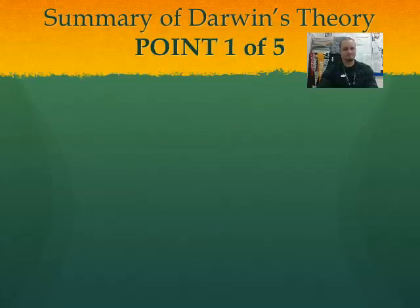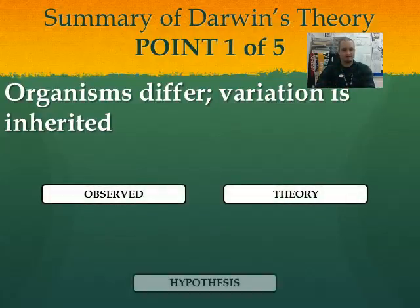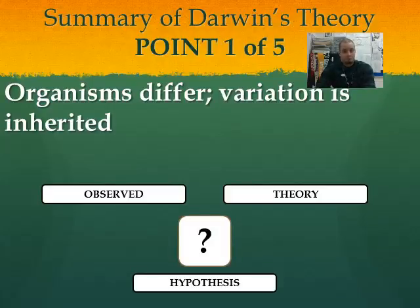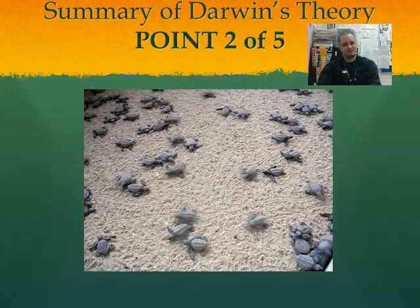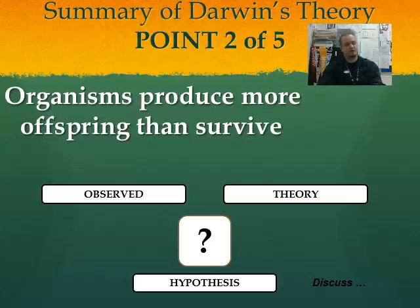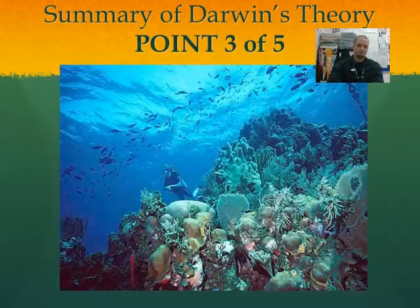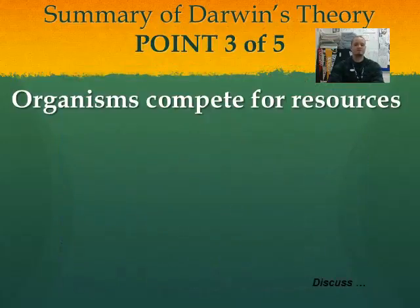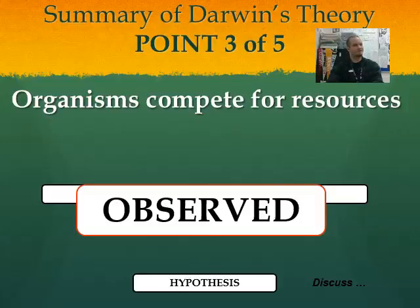A quick summary of Darwin's points: organisms differ and variation is inherited — this is observed; we can see this in everyday life. Organisms produce more offspring than survive — looking at baby turtles all trying to get back to the ocean, a decent amount of them probably won't make it. This is also observed. Organisms compete for resources — observed; we can see this in nature every day.